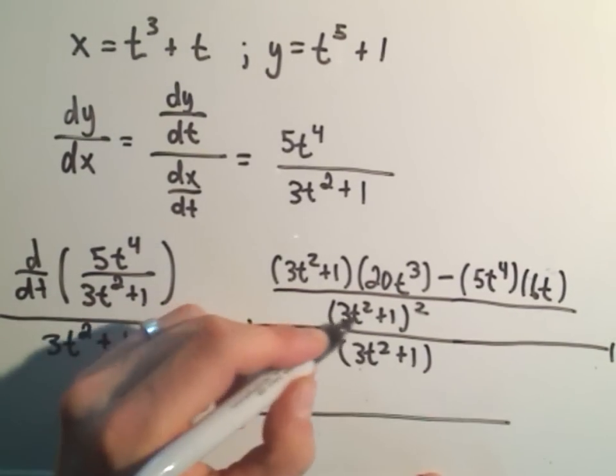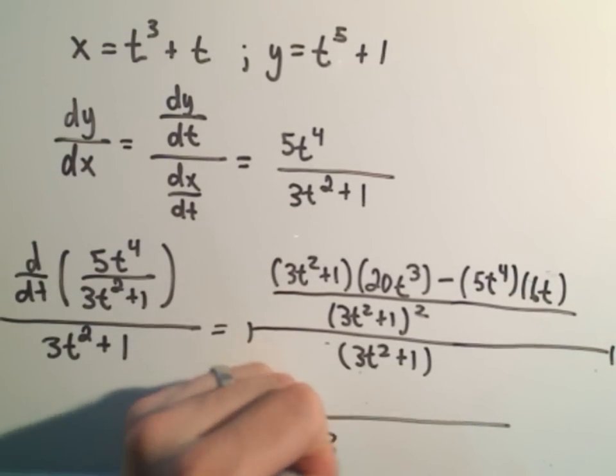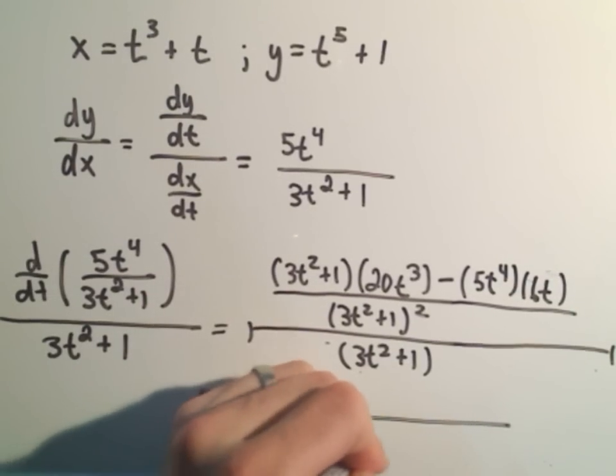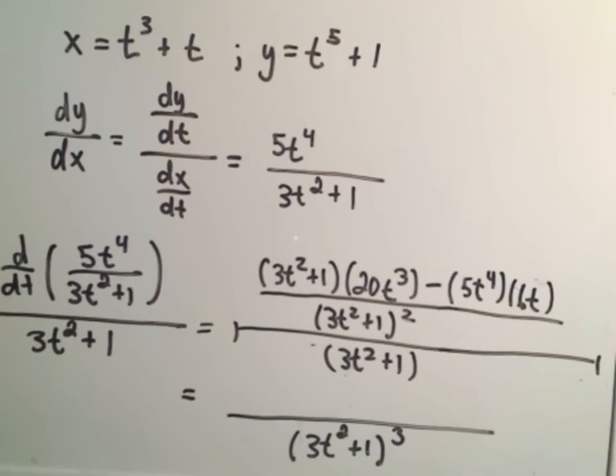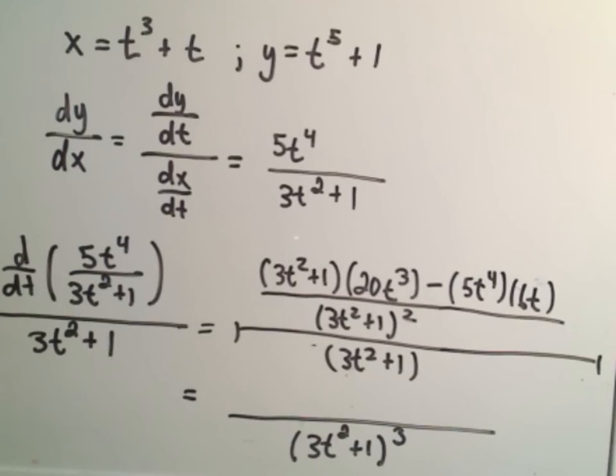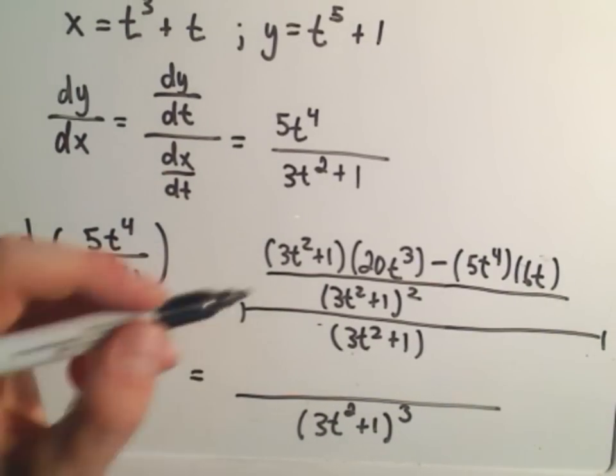So let's see. So we can move the 3t squared plus 1. If we flip and multiply, we'll end up getting the denominator to be 3t squared plus 1 cubed. And then we just need to simplify the numerator of our fraction here to get our simplified form.